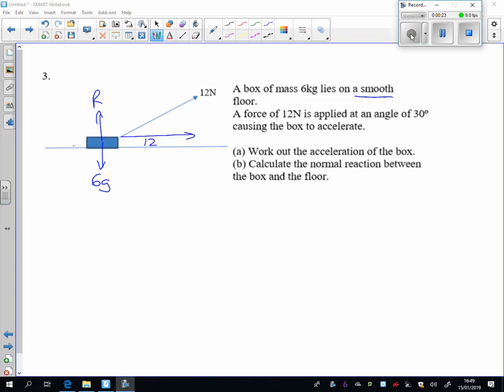and let's split that up into... What angle's that? It's at 30 degrees. So we've got 12 cos 30 here, and up here we've got 12 sine 30.